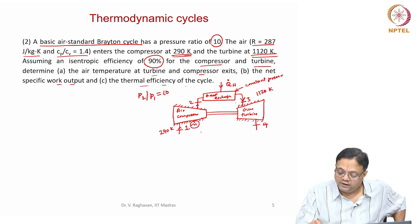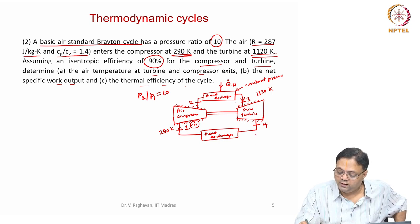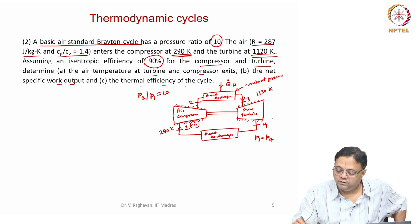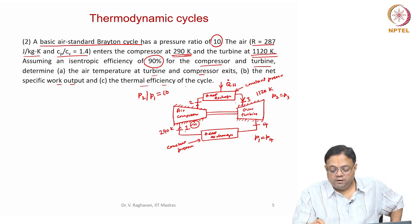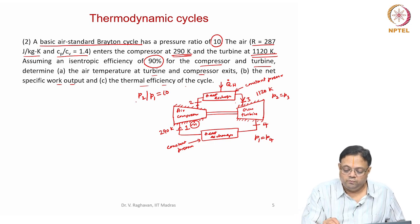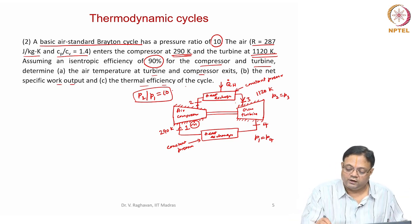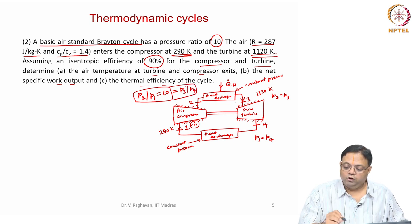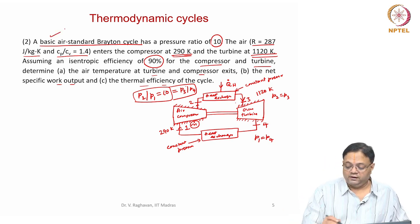I have to close the cycle, so for that I use one more heat exchanger which operates between low pressure. Here the pressure is P1, so P1 equals P4. Similarly, P2 equals P3. Both heat exchangers operate at constant pressure. In the compressor, pressure is increased from P1 to P2 maintaining a pressure ratio of 10. Similarly in the turbine, pressure is decreased from P3 to P4, and P3 by P4 is also 10. So the pressure ratio across turbine and compressor is the same in the basic cycle.